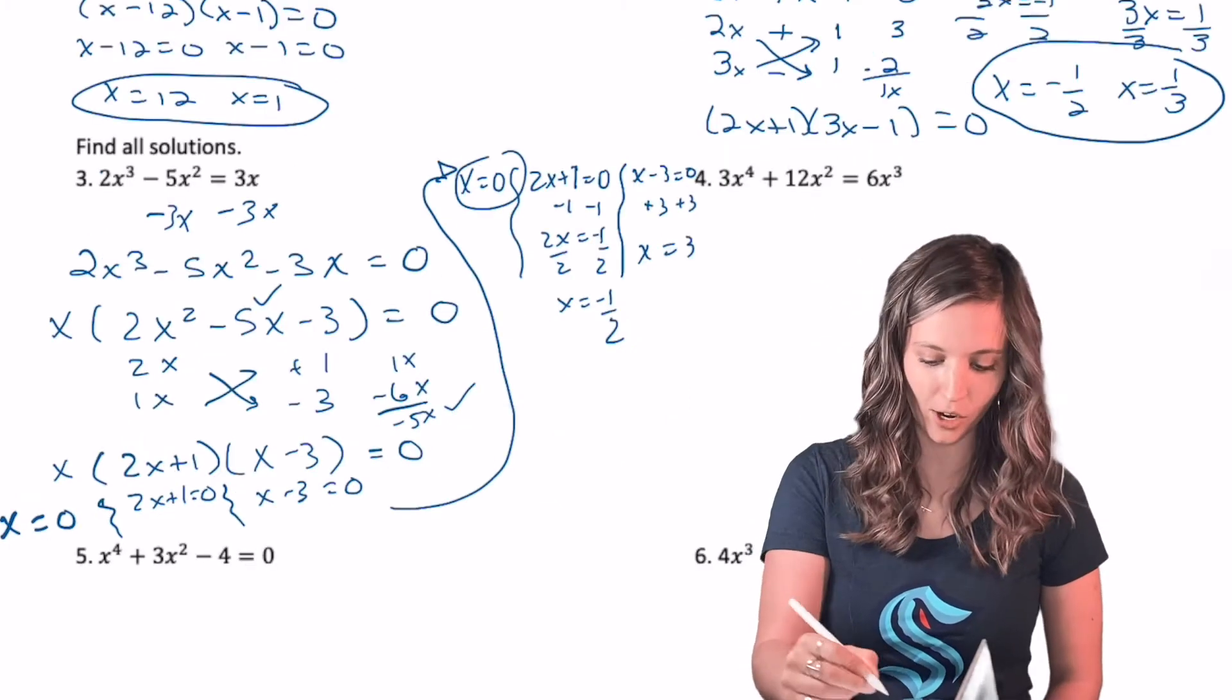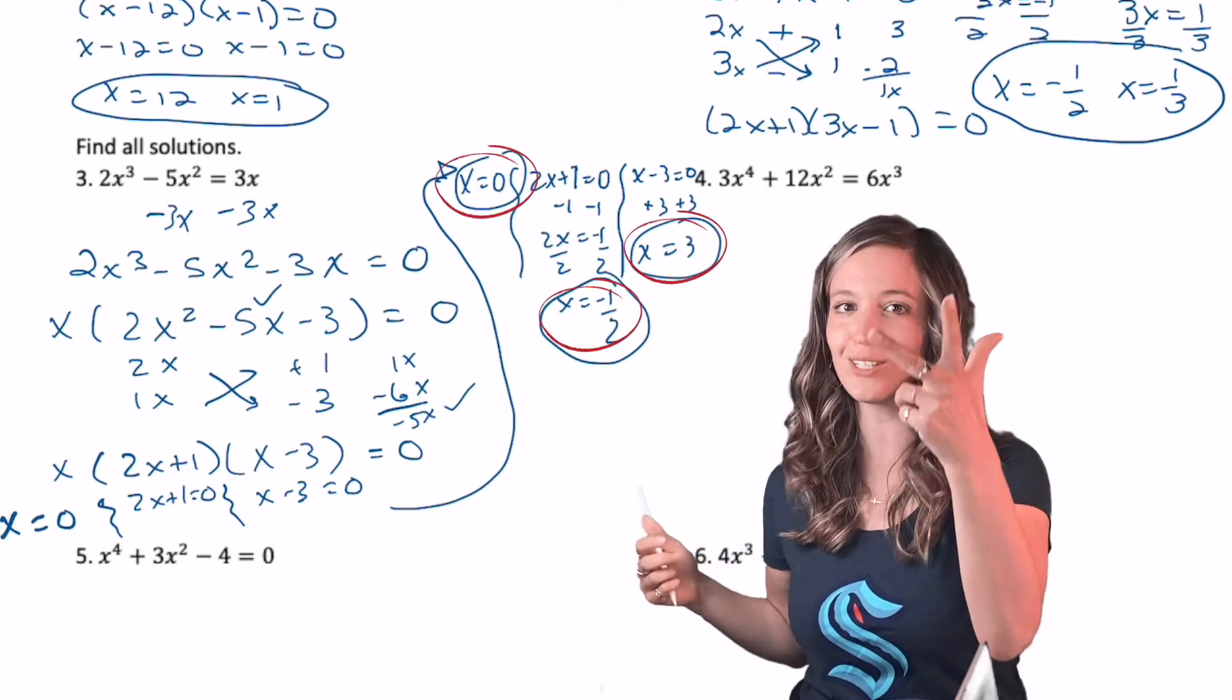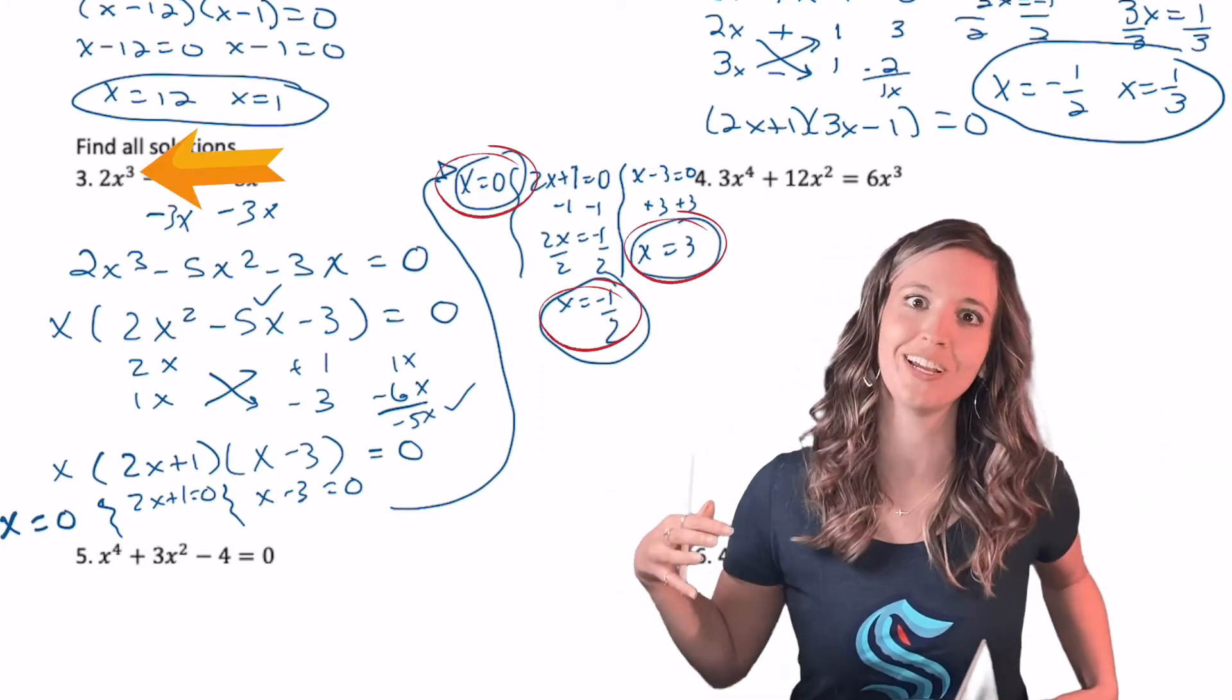All right, I got X equals zero, X equals negative one half, and X equals three. Look at that. Three solutions for a cubic. Degree three.